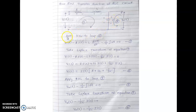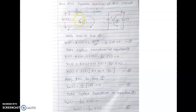Now in this circuit we are applying Kirchhoff's voltage law to loop 1. This is loop 1 and this is loop 2. Kirchhoff's voltage law states that the summation of V is equal to 0 — the sum of voltages in a closed loop is equal to 0. The supply voltage is equal to the algebraic sum of voltage drops across each component. So V(t) is equal to the voltage drop across R plus the voltage drop across L, and we are moving in the clockwise direction. Moving from minus to plus gives us plus V(t).